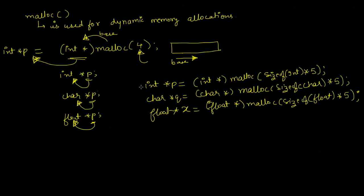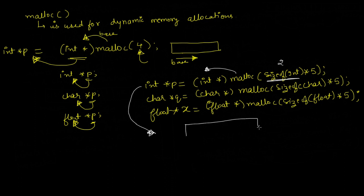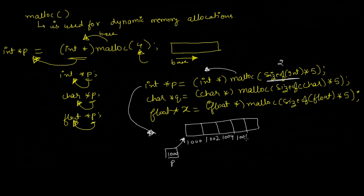You can view this as an alternative way to declare an array. If we write int* p = malloc(sizeof(int) * 5), sizeof(int) returns 2 bytes, so 2 multiplied by 5 gives 10 bytes. Malloc allocates 10 bytes and returns the base address. The memory is laid out as five 2-byte blocks with addresses 1000, 1002, 1004, 1006, and 1008, and the base address 1000 is stored in pointer p.